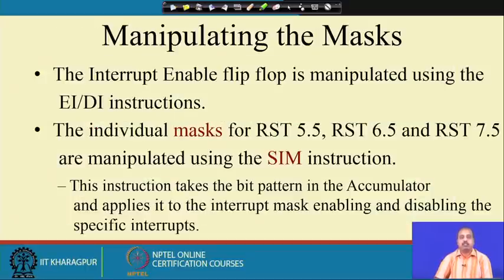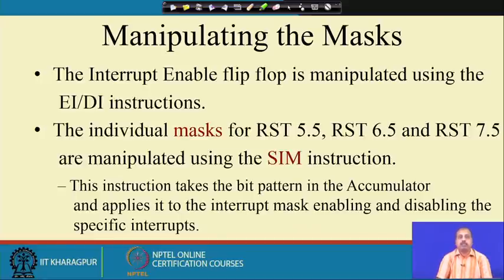Since the masks are there, we must know a technique by which these masks can be manipulated. One way to manipulate the interrupt enable flip-flop is through the EI/DI instructions. The individual masks for 5.5, 6.5, and 7.5 are manipulated using the SIM instruction — SIM stands for Set Interrupt Mask.